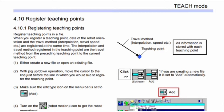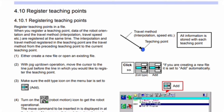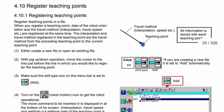When you register a teaching point, data of the robot orientation and the travel method, interpolation, travel speed, etc. are registered at the same time. The interpolation and travel method registered in the teaching point are the travel method from the preceding teaching point to the current teaching point.